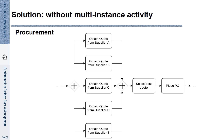However, this has several disadvantages. This process model is not very flexible — if there is a sixth preferred partner, we have to change the model. The model is also not very compact, since we have essentially five times the same activity shown. There is a smarter way of representing this behavior using so-called multi-instance activities.